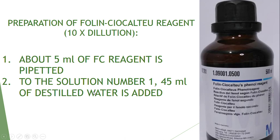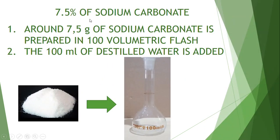The next preparation needed is the Folin-Ciocalteu reagent with 10 times dilution. I took 5 ml of the FC reagent and reacted it with 45 ml of distilled water — a 10 times dilution. The next material is a 7.5% sodium carbonate solution: about 7.5 g of sodium carbonate diluted with 100 ml of distilled water.